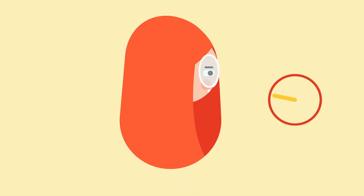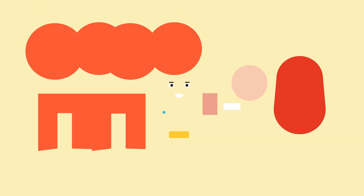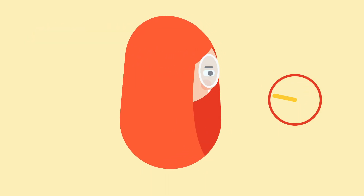Hello everyone, welcome to Proud Animator. In this video we are going to learn how to rig and animate a 360 degree head rotation in After Effects. This is the illustration we are going to be working on, and this is how I have separated the layers in Adobe Illustrator to prepare the file for animation. Now let's jump into After Effects.